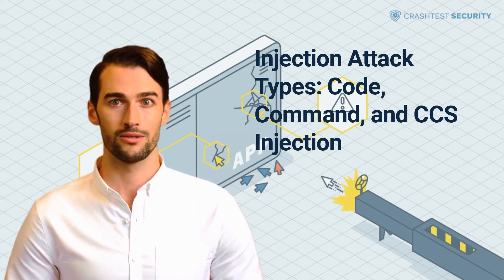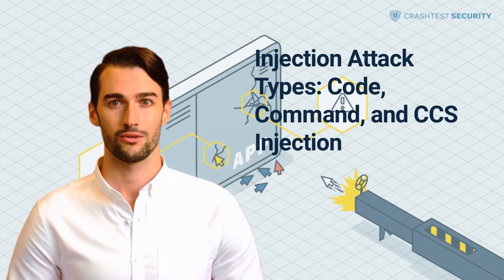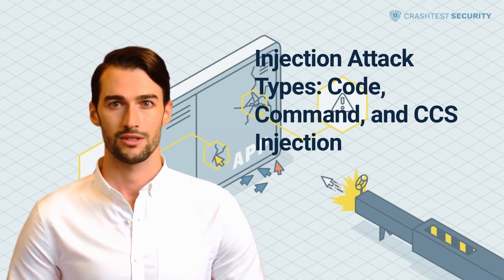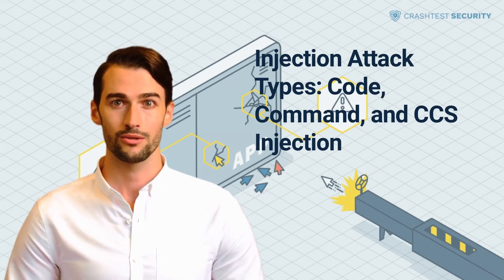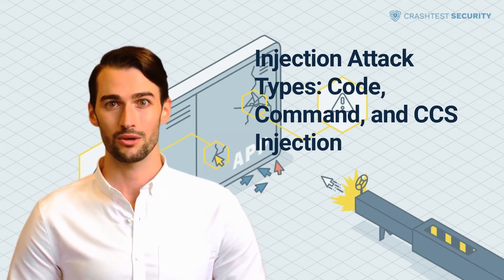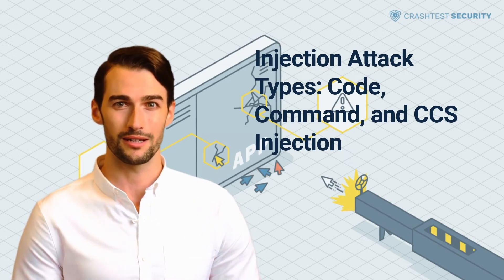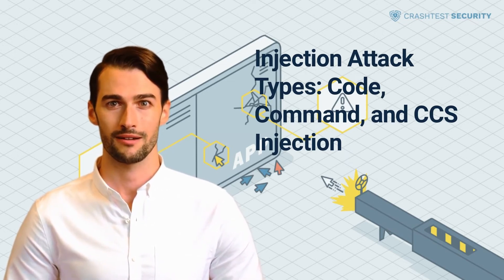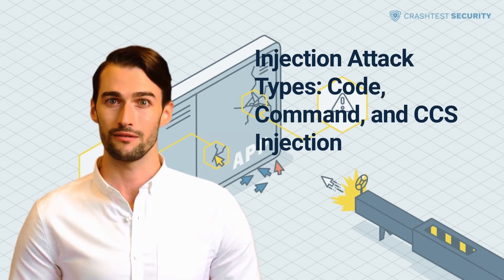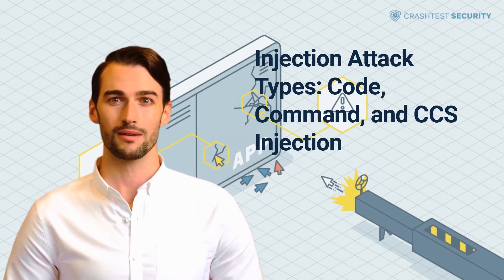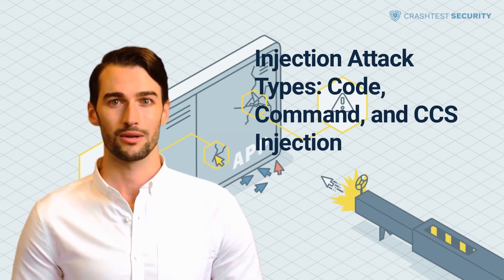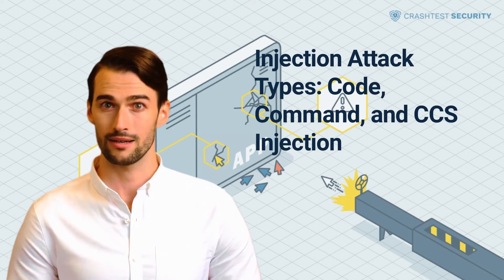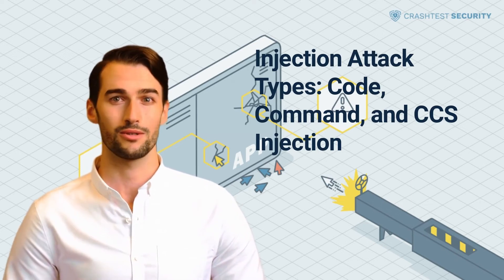A CCS injection exploits a vulnerability found in the change cipher spec processing in some versions of OpenSSL. During such an attack, invalid signals are sent by attackers in the handshake session between servers and clients. This allows them to seize encryption key materials, access the communication between server and client, and possibly perform identity theft. These are the most common and severe injection attacks used on web applications. Unfortunately, protecting your applications can be a massive uphill task for companies or individuals with many web applications and limited developer time and resources.